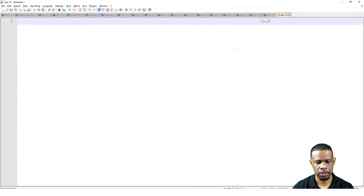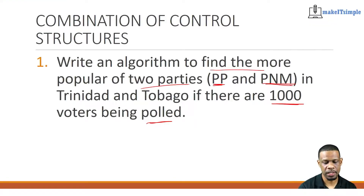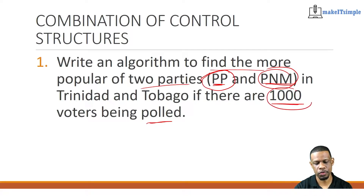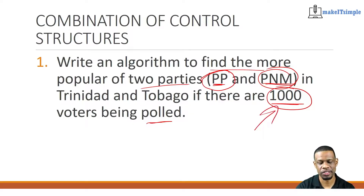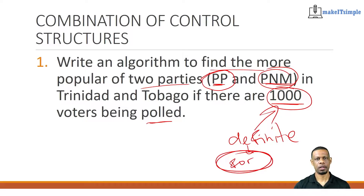My goal is to write an algorithm and I want to find the more popular of two parties. That means I have to figure out how many votes each one gets. It sounds like I'll check to see if one is greater than the other, then determine who is the winner. But they said I'm getting 1,000 votes — and because it's a definite number, I can use a definite loop. The for loop will help me get the 1,000 votes, and what I do inside the loop will depend on the logic I want to put in place to see who's the winner.